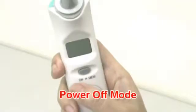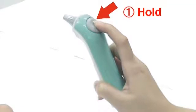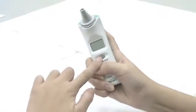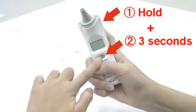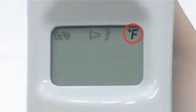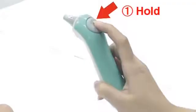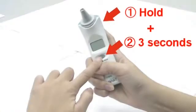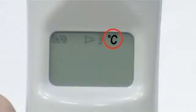In power off mode, press and hold the scan button, then press the on memory button for three seconds. The icon will switch from Celsius to Fahrenheit. You can also use the same process to change the LCD display from Fahrenheit to Celsius.